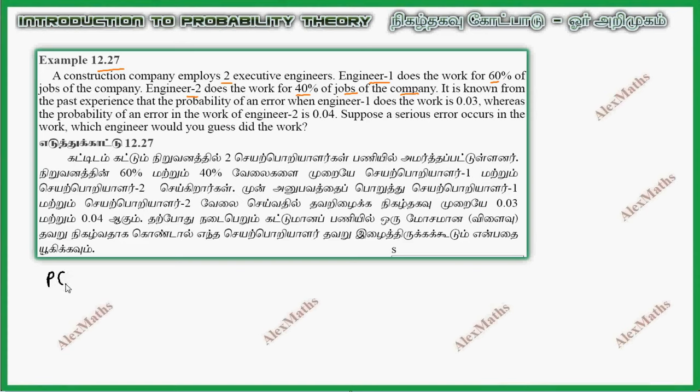P of Engineer 1 is 60 by 100. That is given in the question. It is known from past experience the probability of an error when Engineer 1 does the work is 0.03. P of error given Engineer 1 equals 0.03.